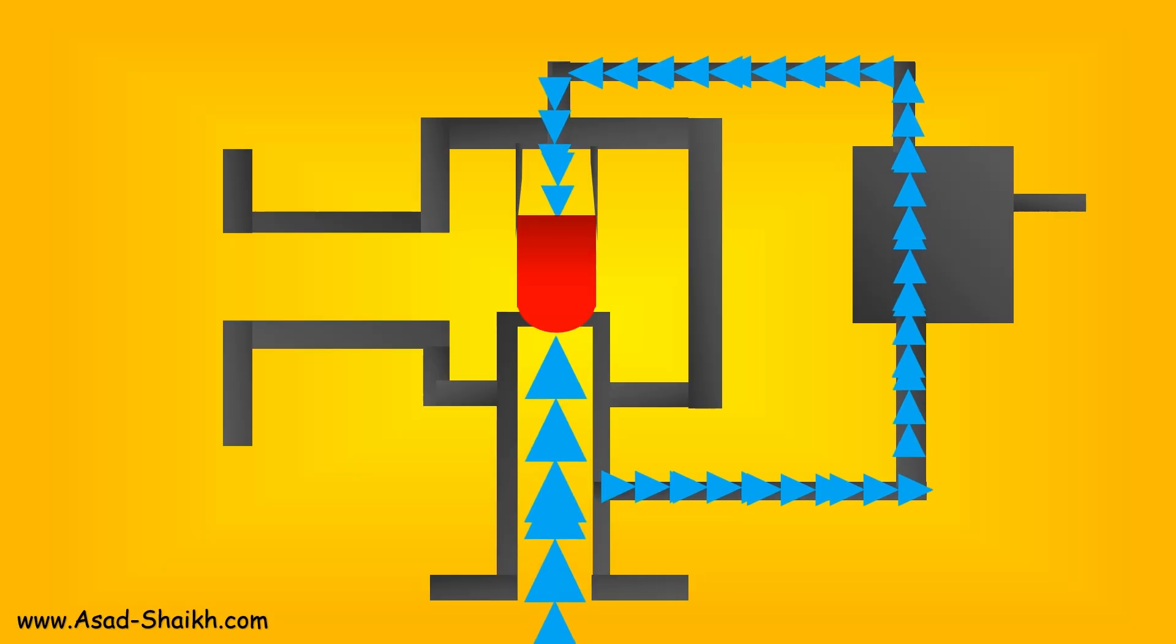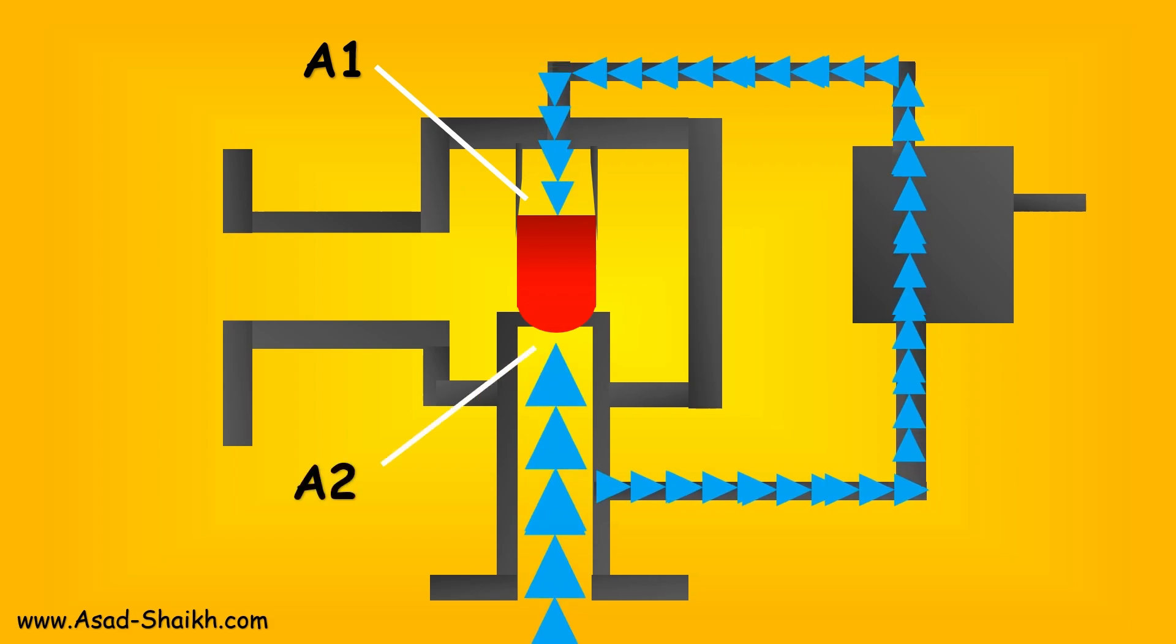To understand this, the first important phenomenon is the area A1 and area A2. Once you understand the beautiful play between area A1 and A2 and the pressures on the upstream and downstream, you will very easily understand how a pilot relief valve works.